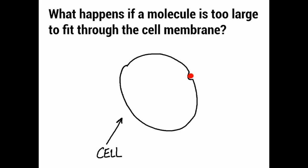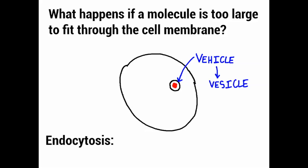As it goes further and further in, the cell membrane closes it off against itself and creates a bubble. When it goes inside, now it's a bubble. The bubble acts as a vehicle, and we've already learned that when you have a vehicle inside of a cell, it's known as a vesicle.